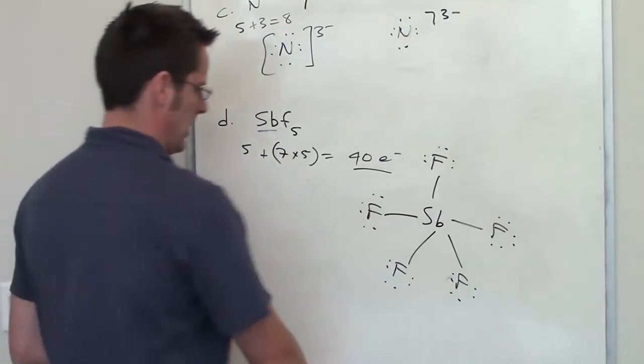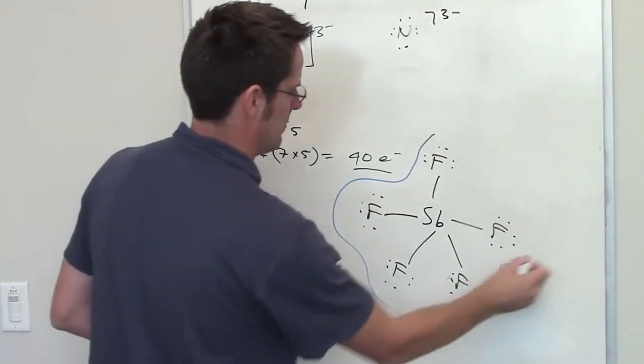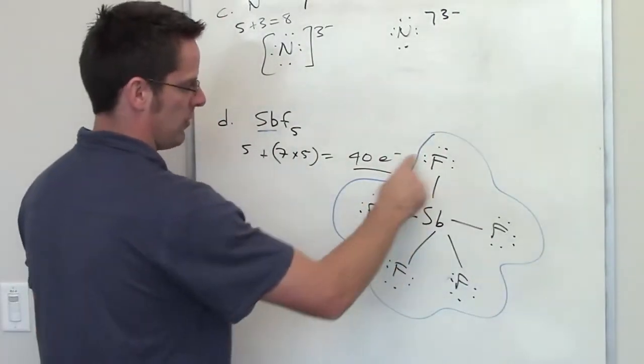So that Lewis structure right there, try and circle it so that it's kept separate from my gibberish over here, has full octets on all the fluorine atoms.